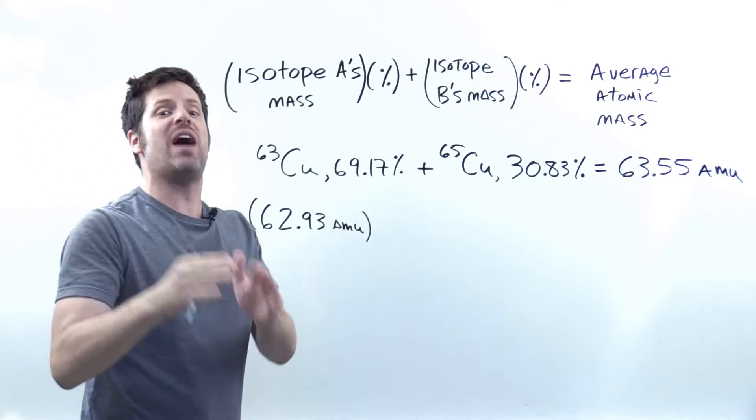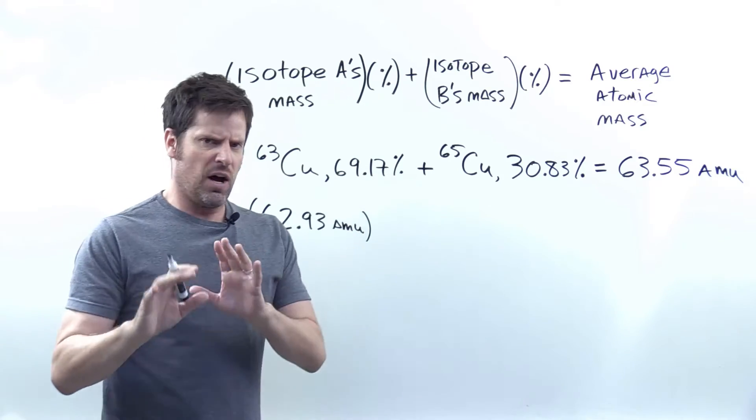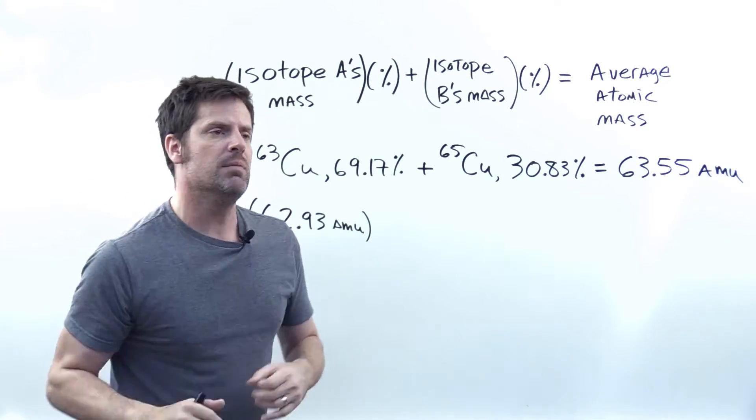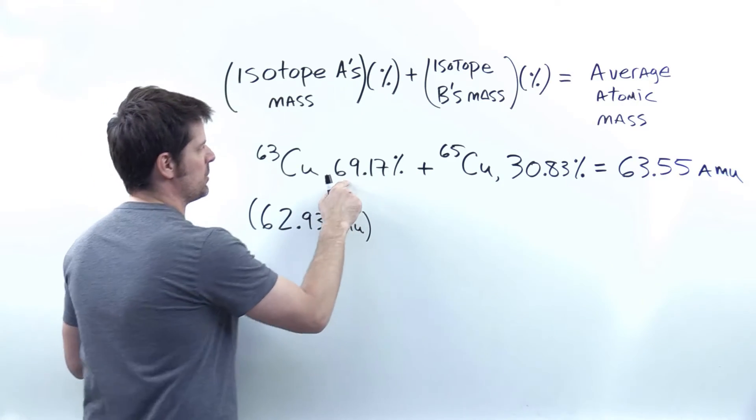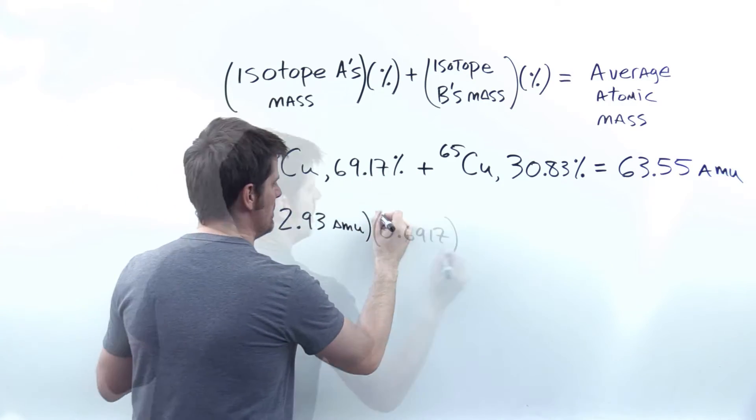when you do this, you have to divide your percentage by 100 in order to get what is officially called the mole fraction, but I personally like to call the decimal percentage of this isotope. So 69.17 divided by 100 goes right there.